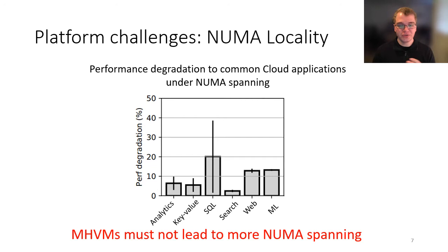This potential NUMA spanning becomes a serious issue when we look at underlying applications inside those VMs. We took a VM, forced half of its memory to be on a different NUMA node to create spanning, and ran several benchmarks — a mixture of batch workloads and latency-sensitive applications — and found that all of them suffer significant performance degradation when their VMs are spanned. So we need to ensure we don't lead to additional NUMA spanning in the cluster.